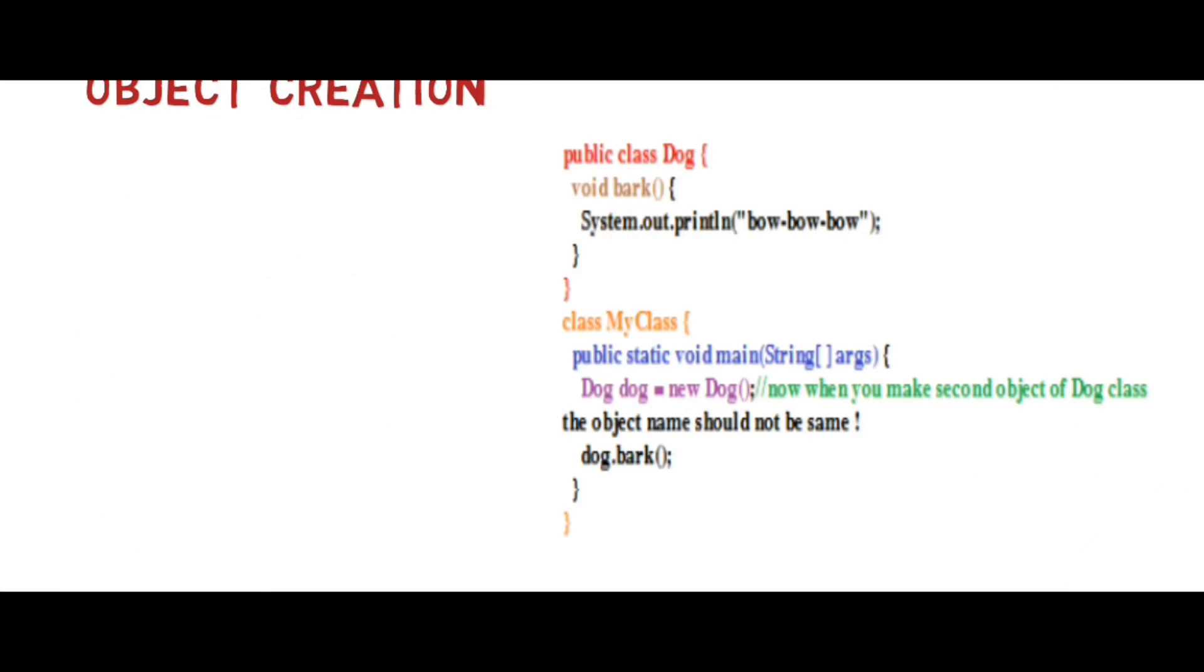Here we have created two classes: Dog class and MyClass. In MyClass we have created an object of Dog. And then we have called dog.bark. Dot is a notation which is used to access the attributes and methods.